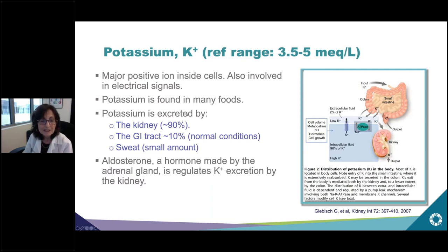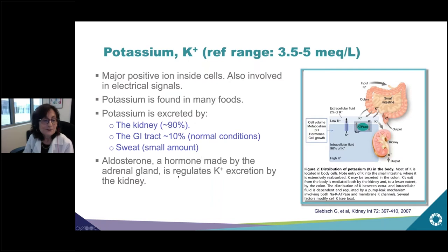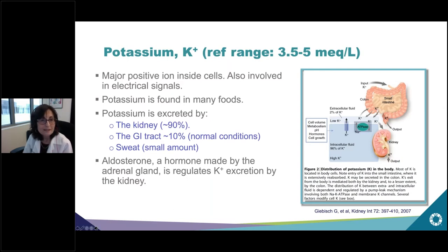About 90 percent of the potassium you take in will be excreted by the kidney. Under normal conditions, the GI tract excretes about 10 percent — but if you develop diarrhea, the GI tract can excrete much more. Sweat is an even smaller amount under normal conditions, but if you're a marathon runner you excrete even more. Aldosterone, made by the adrenal gland, is very important in regulating potassium excretion by the kidney.